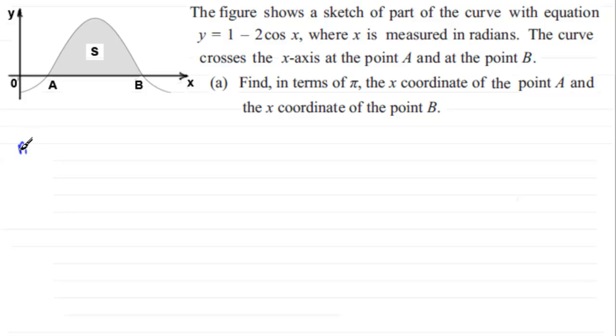Now, we know that at A and B, the y-coordinates for our curve should equal 0. So therefore, that's going to mean that 1 minus 2 cos x is going to equal 0. And if we rearrange this by adding 2 cos x to both sides, we're going to get 2 cos x equals 1.